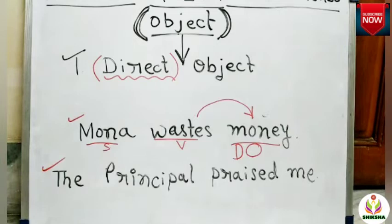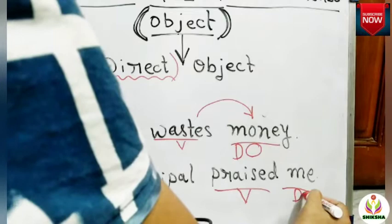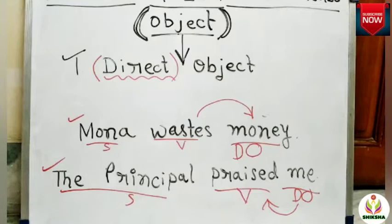In the second sentence, 'The principal praised me.' The principal is the subject, praised is the verb. Whom did the principal praise? The principal praised me. Here, the word 'me' directly receives the action praised, so these are examples of direct objects.